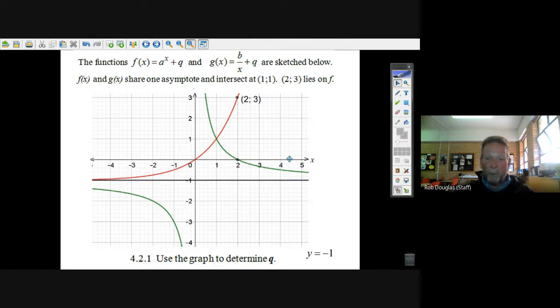So q must be minus one, because that's the flat horizontal asymptote that defines the hyperbola. And it's the one that's the horizontal asymptote that the exponential equation is kind of taken off from.